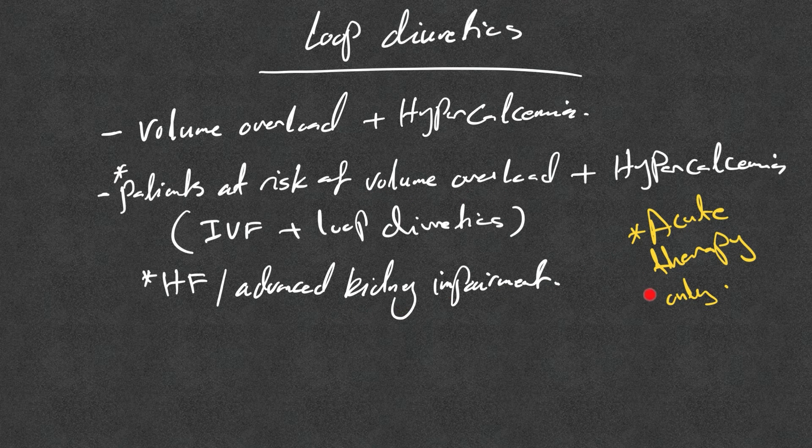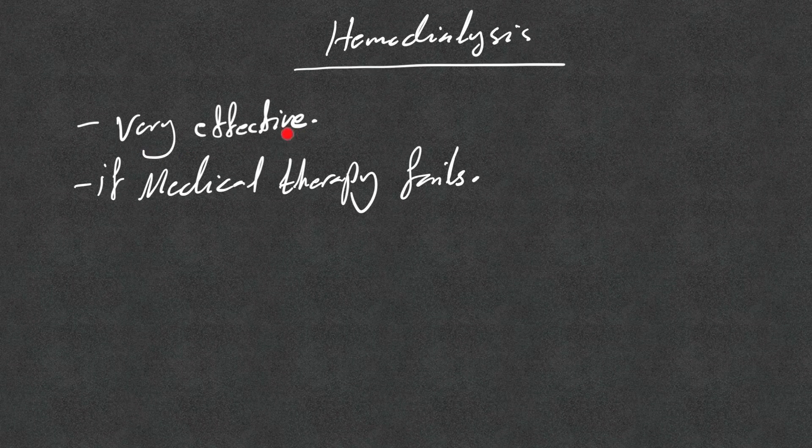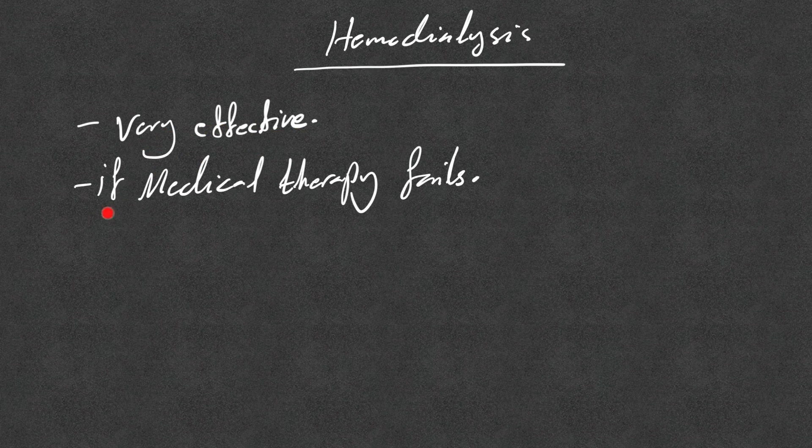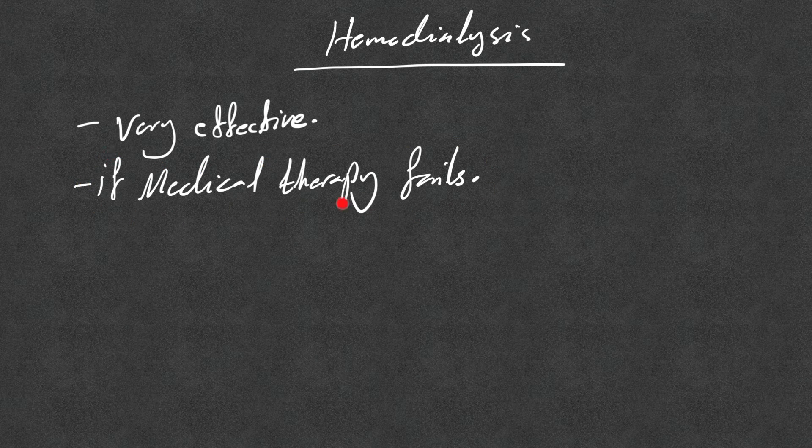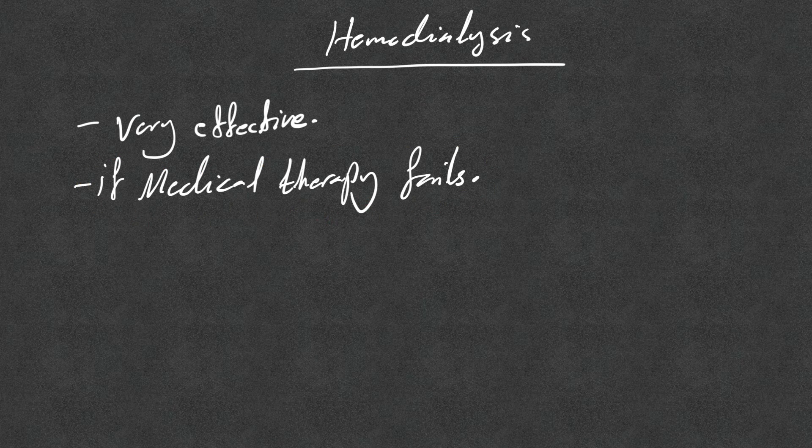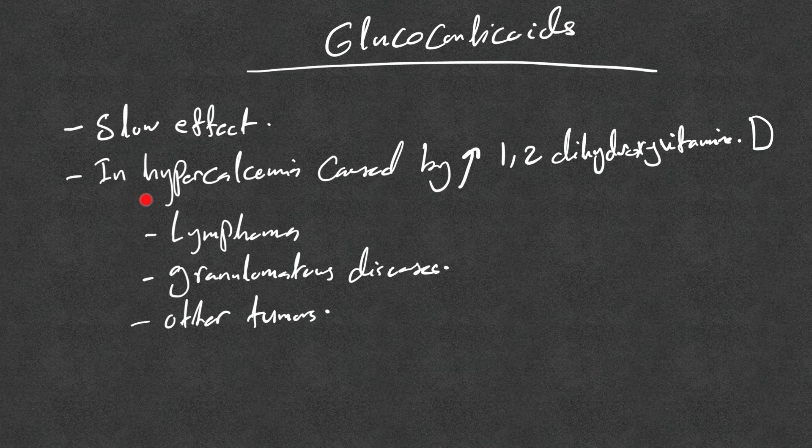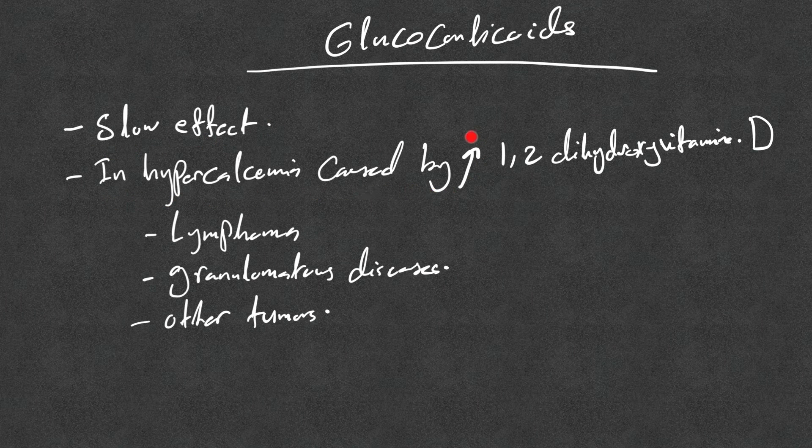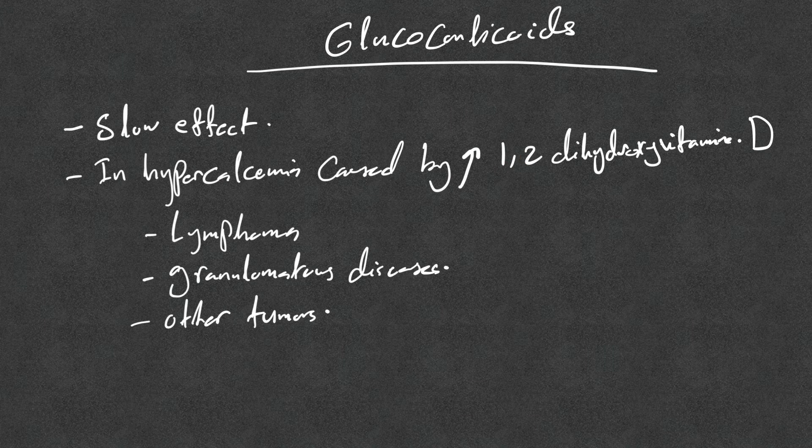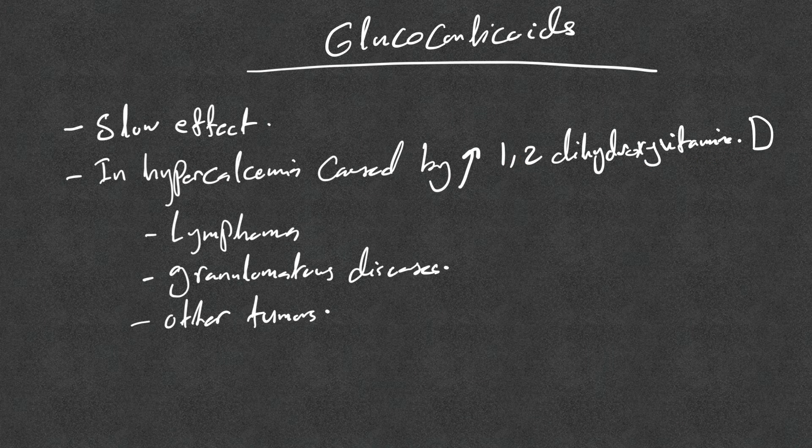Hemodialysis is very effective and removes calcium within hours, and only if medical therapy fails to correct severe hypercalcemia and the patient remains severely symptomatic. Glucocorticoids have slow effects and they mainly are used in hypercalcemia caused by the increase in 1,25-dihydroxy vitamin D. And we can see this in lymphoma, granulomatous disease like sarcoidosis, and other tumors.